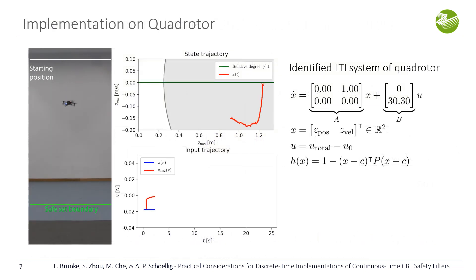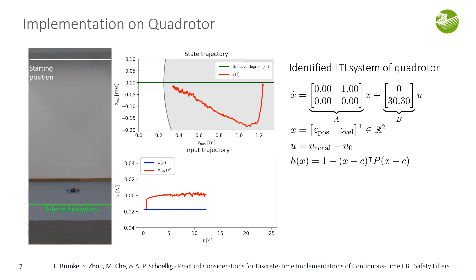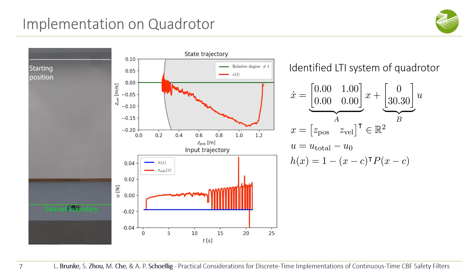We implemented the CBF safety filter on a quadrotor with an uncertified input that makes the quadrotor drop. The CBF safety filter tries to prevent the quadrotor from getting too close to the ground. However, suddenly there are jumps in the control input and the quadrotor ends up leaving the safe set.